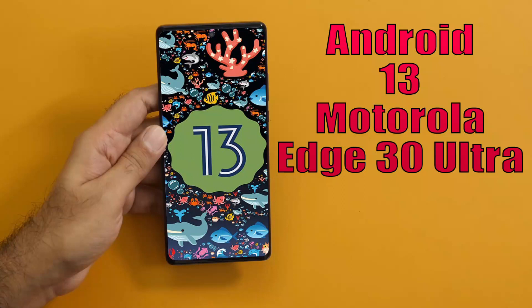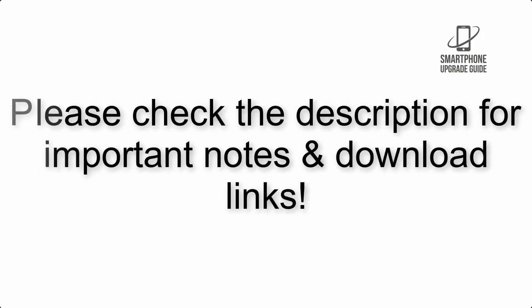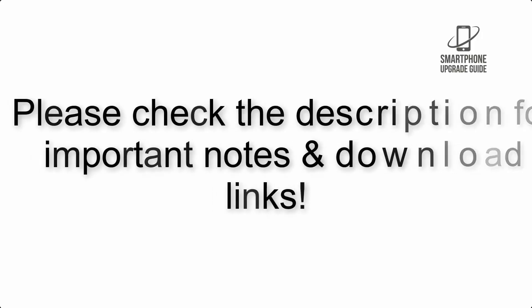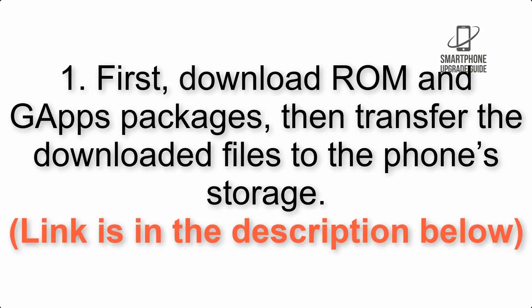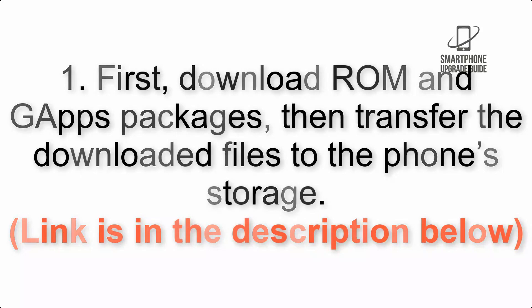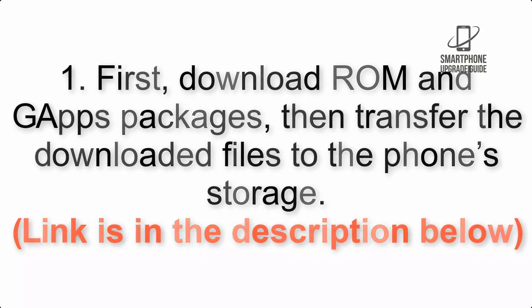Install Android 13 on Motorola Edge 30 Ultra via AOSP ROM. Please check the description for important notes and all the download links. First, download the ROM and GApps packages, then transfer the downloaded files to the phone storage. The link is in the description below.